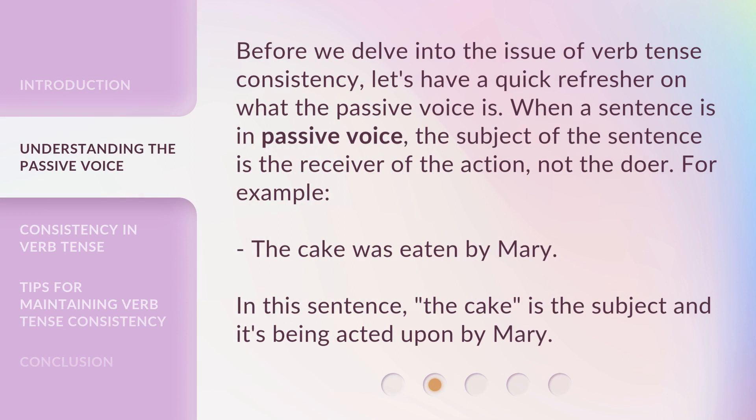Before we delve into the issue of verb tense consistency, let's have a quick refresher on what the passive voice is. When a sentence is in passive voice, the subject of the sentence is the receiver of the action, not the doer. For example, 'The cake was eaten by Mary.' In this sentence, the cake is the subject and it's being acted upon by Mary.